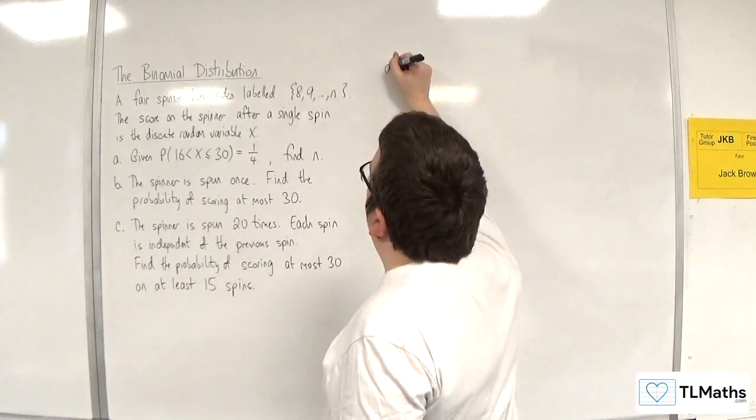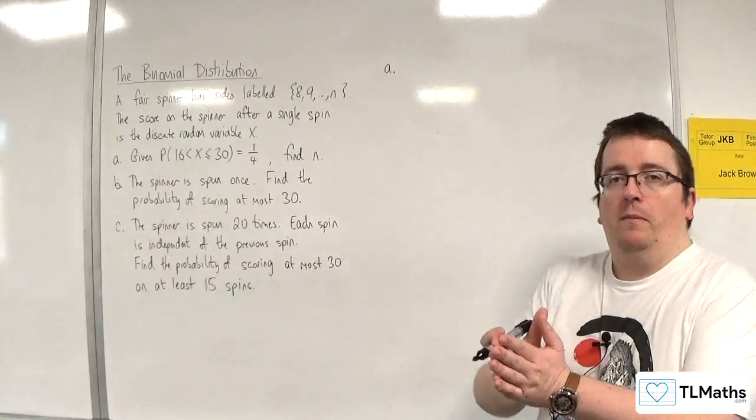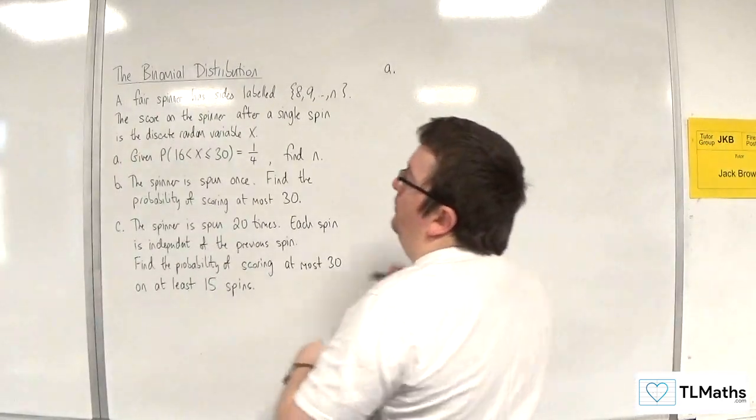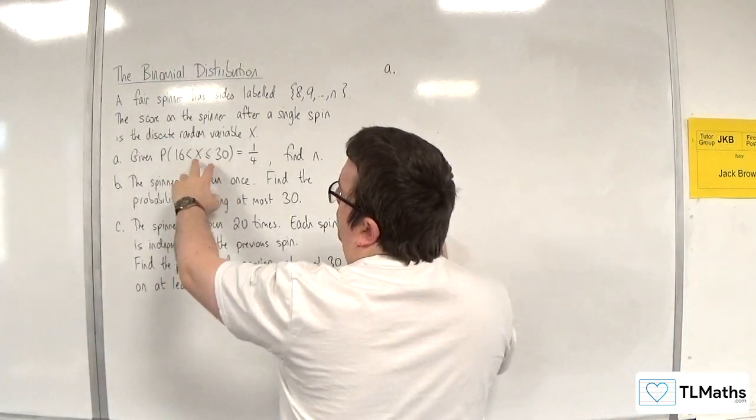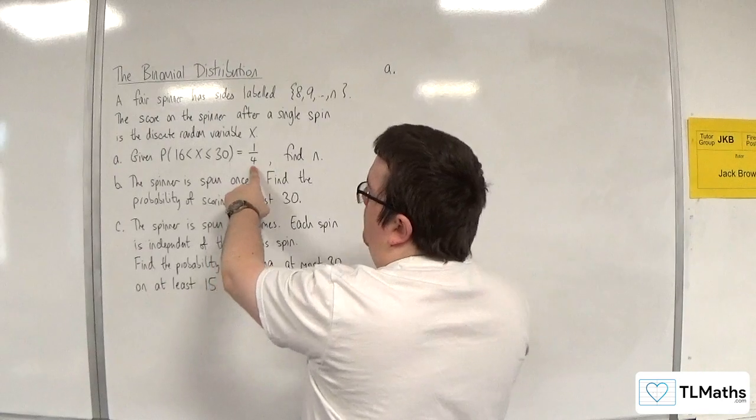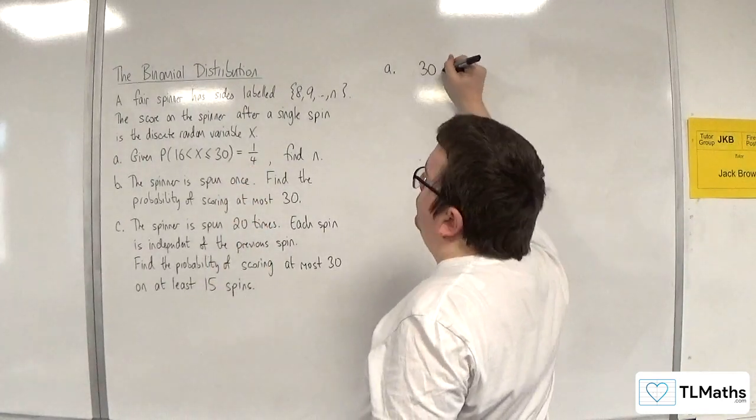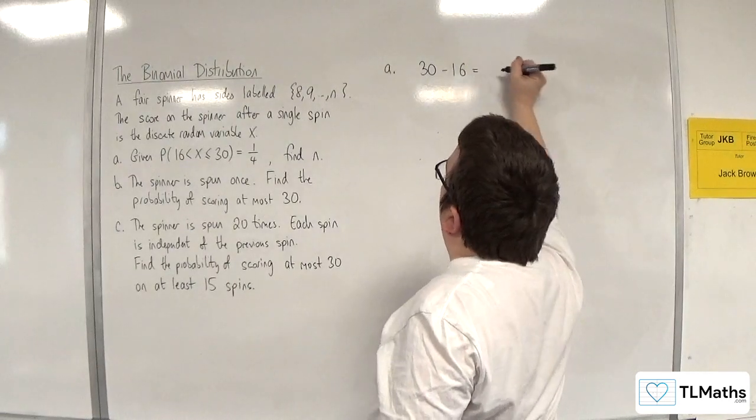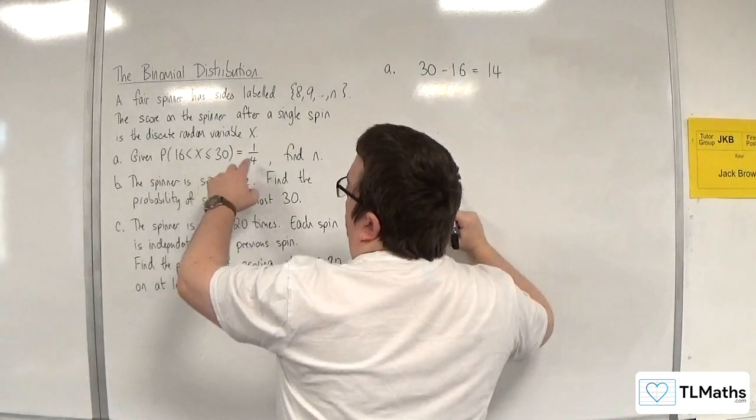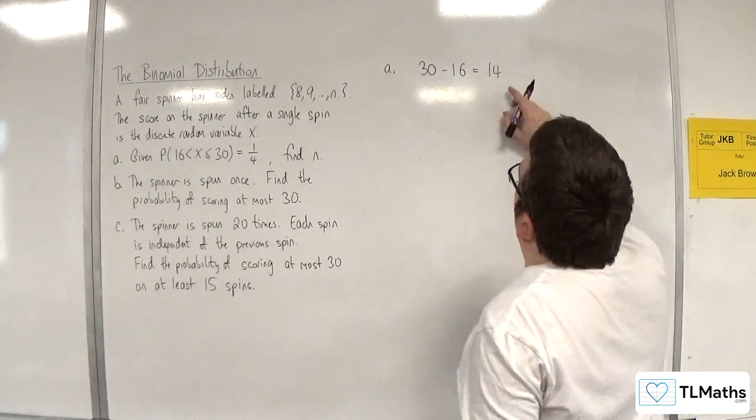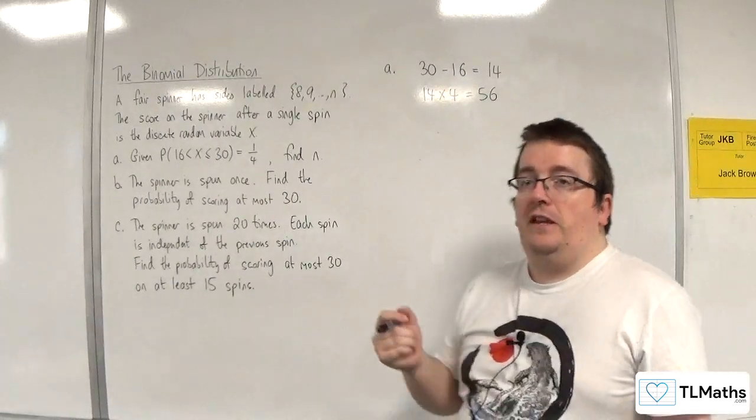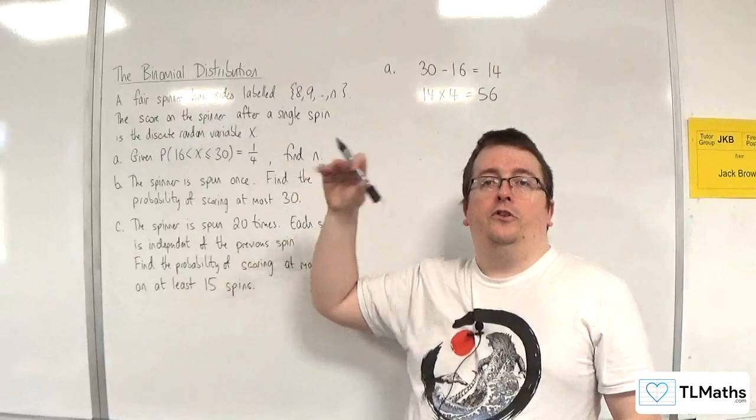We know that all the probabilities are the same, so this is a uniform distribution because it's a fair spinner. What I need to know is how many values we've got between 16 and 30 to represent the 1 quarter. So we've got 30 take away 16, and that's going to be equal to 14. So 14 values gets us 1 quarter, so 14 times by 4 is 56. So there are 56 sides to your spinner.